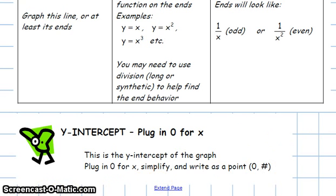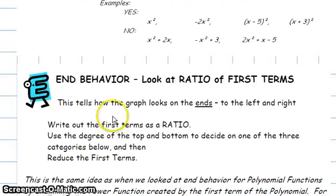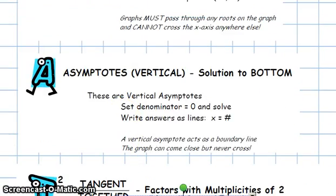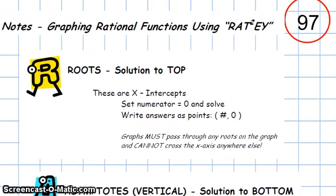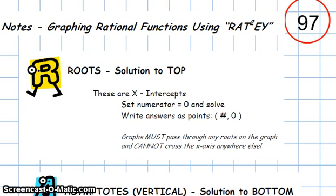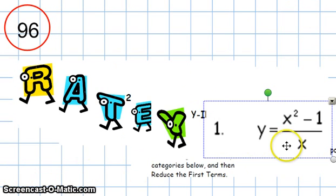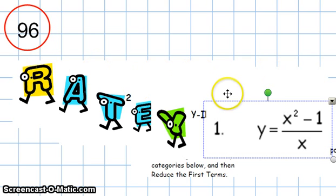I went kind of fast, because I really want to spend time on the example. You can write the example on the opposite page — print these notes and put them on page 97, because we're going to do the example on page 96. Here we have the problem: y equals (x² − 1) over x. We're going to graph this rational function using the RATY method.